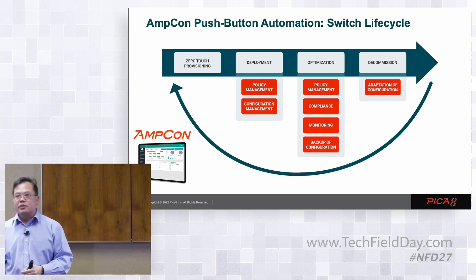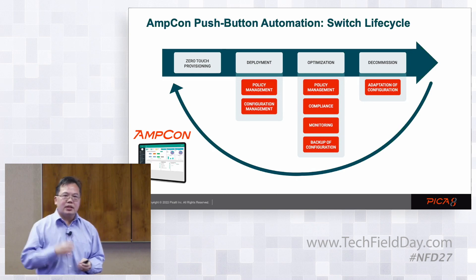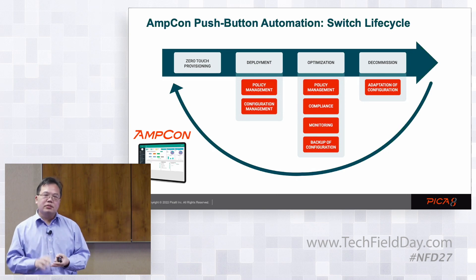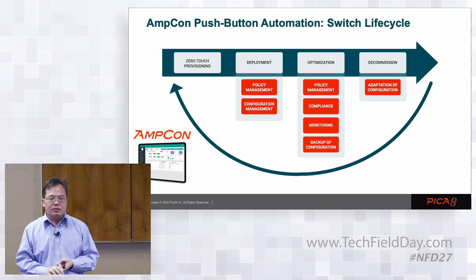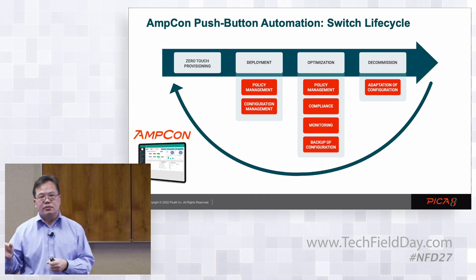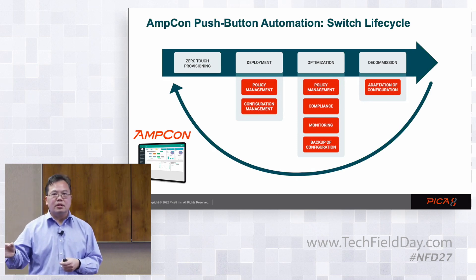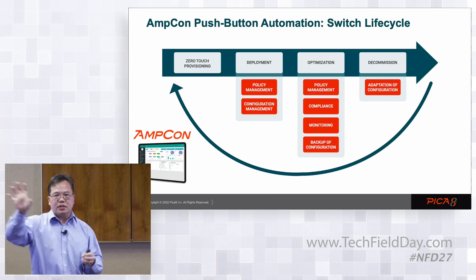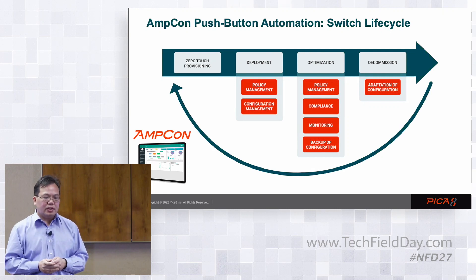Then day two, you get into the real operation — you bring up the data flow, the networking data starts to flow. From there, you're collecting data, making sure it continues to optimize the network. Until someday you say, I need to upgrade the switch again — replace it with better, faster, and more secure network gear. So this is the life cycle of the management.